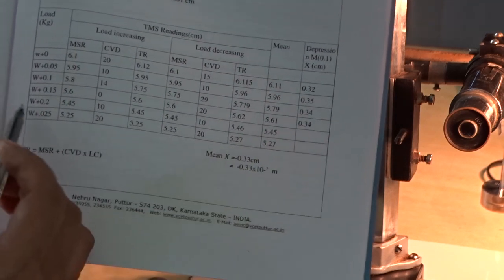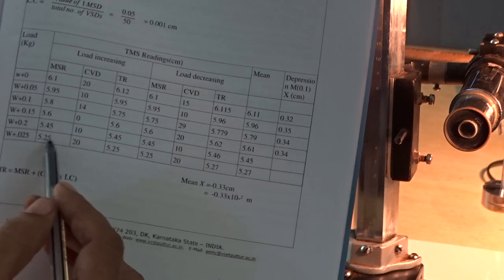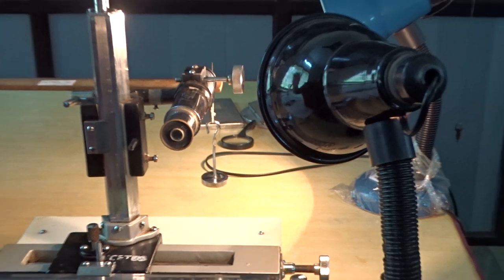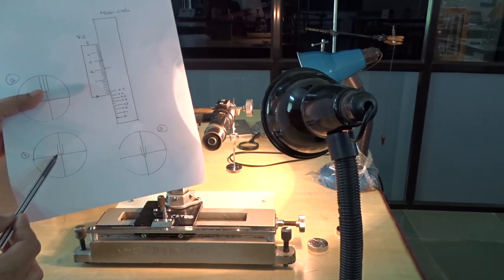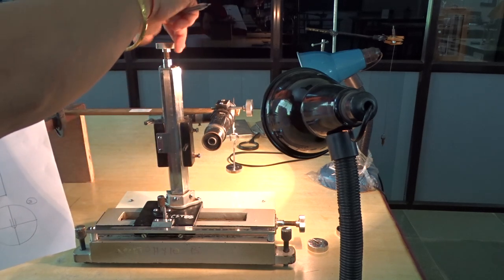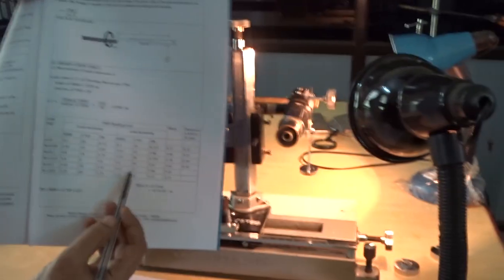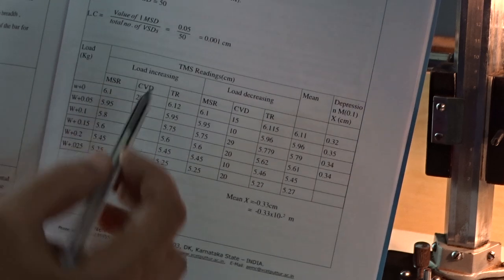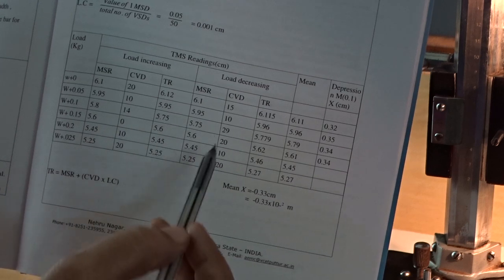Go on writing MAIN SCALE reading and CVD. Next, load decreasing. Once you take readings for W plus 0.25, next you have to decrease the load. Last reading of load increasing will be the first reading of load decreasing. Same reading is written here. Next, remove 50 gram from that slotted weight. Again, depression decreases. That position of the pin will change. Again, you have to get the same position. Do adjustment in the traveling microscope. Then, write reading from bottom to top. Second reading of load decreasing, it is written here. Go on removing 50 gram each time until it becomes W plus 0.